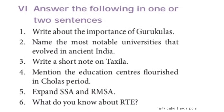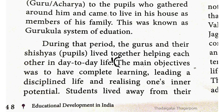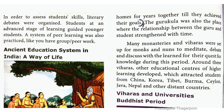Section 6 — Answer the following in 1 or 2 sentences. Question 1: Write about the importance of Gurukulas. The answer is on page 48. The main objectives were to have complete learning, lead a disciplined life, and realise one's inner potential. Students lived away from their homes for years together till they achieved their goals.